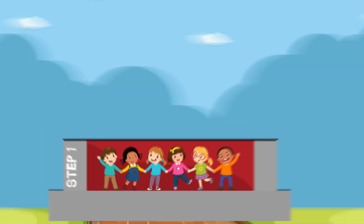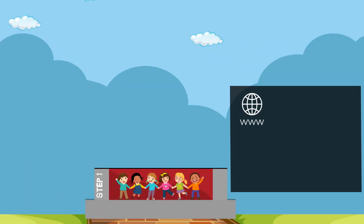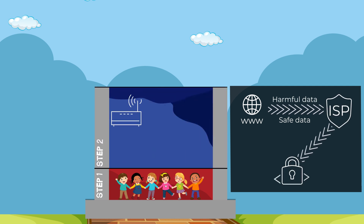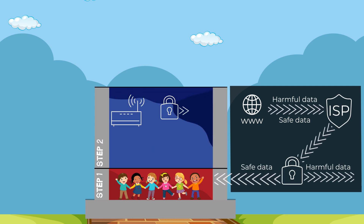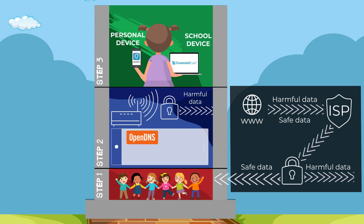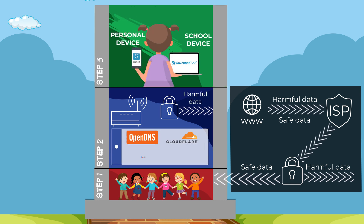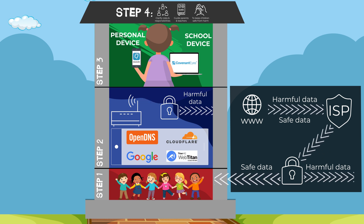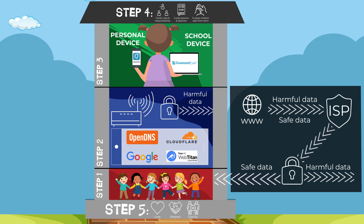Let's recap. Step 1: choose an internet service provider that offers filtering of adult content. Step 2: put DNS software in place for your Wi-Fi. Step 3: secure all end-user devices with filtering software. Step 4: develop and implement policy to enforce implementation of protective measures. Step 5: establish a value-based culture that supports responsible behaviour.